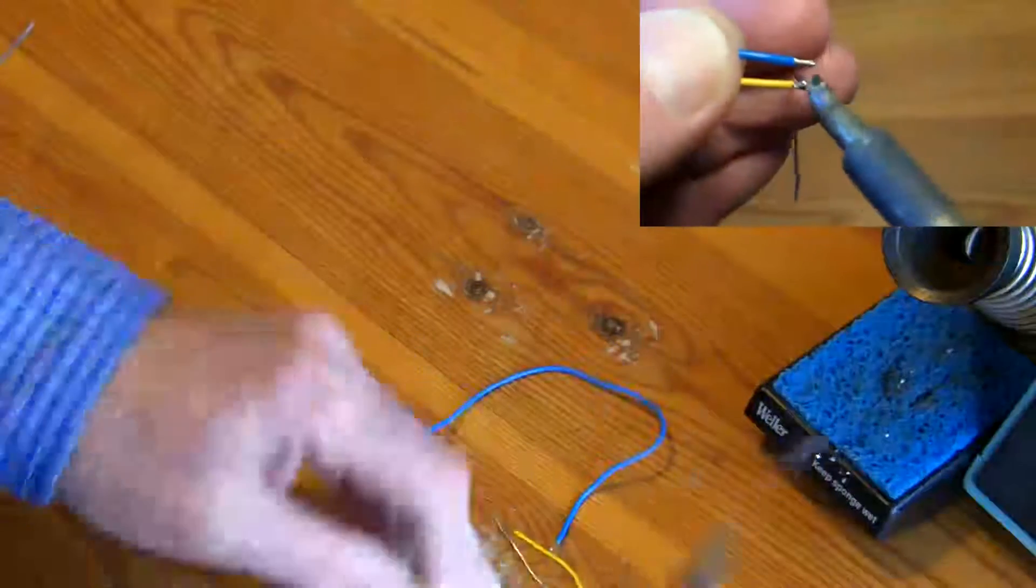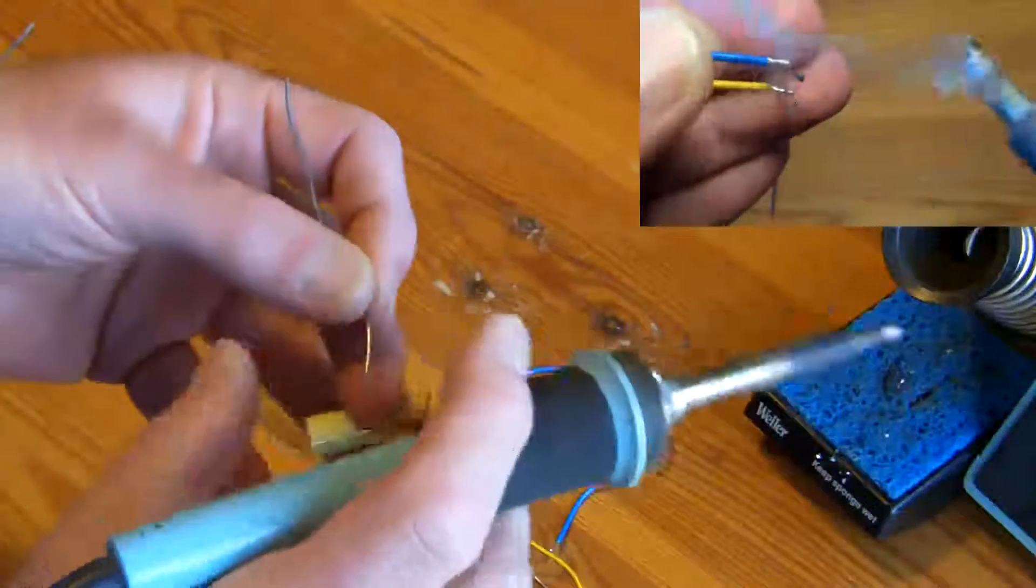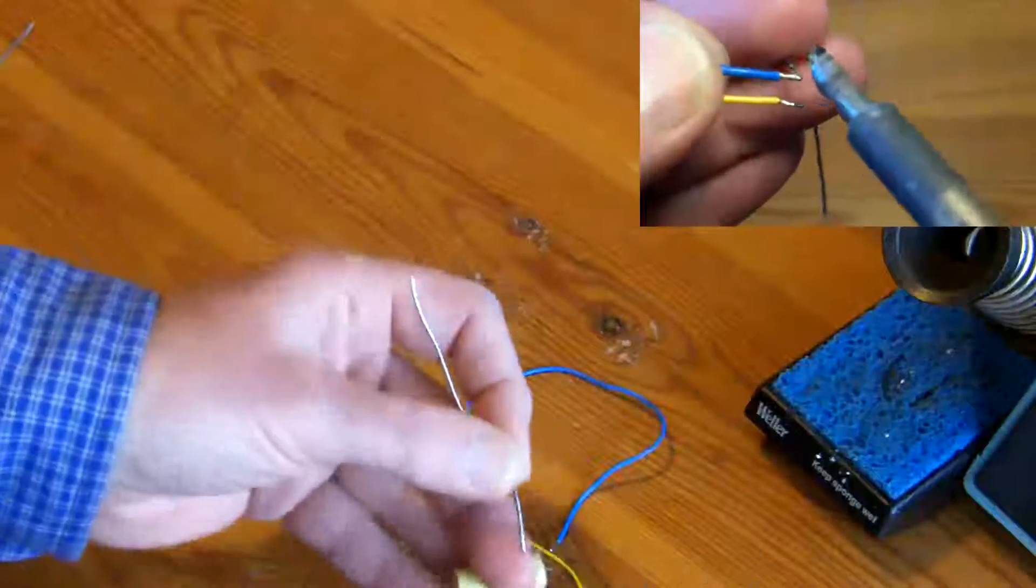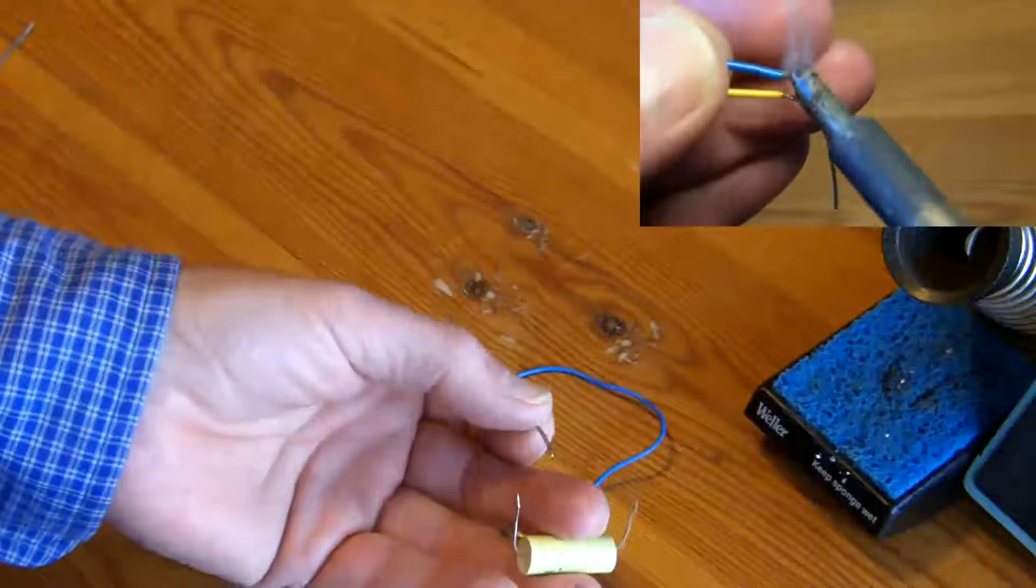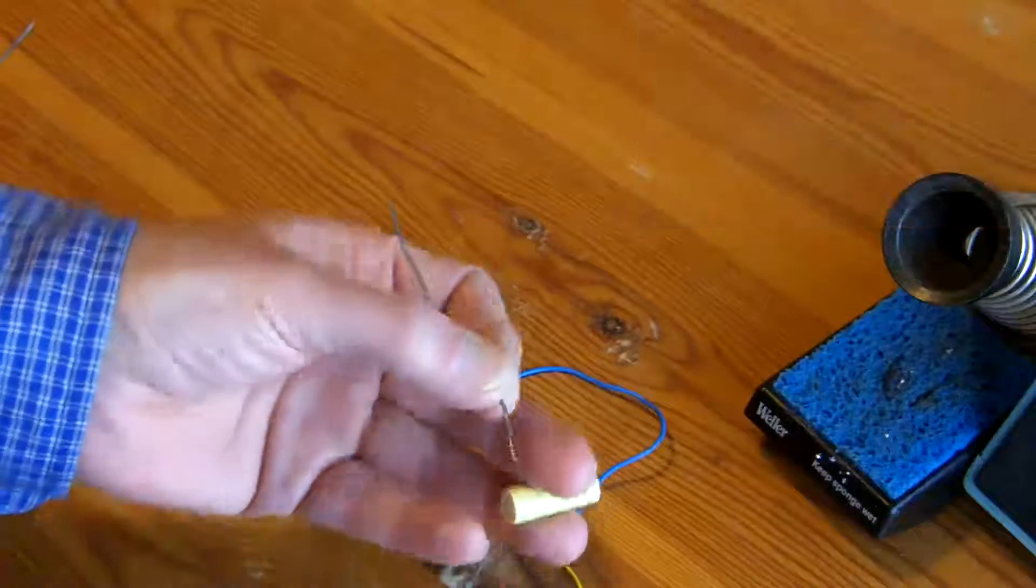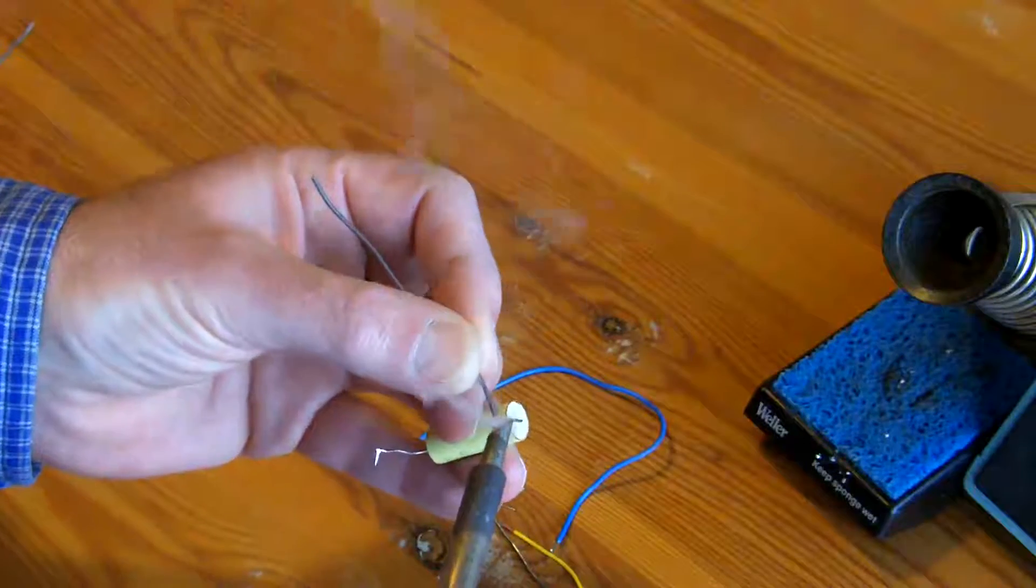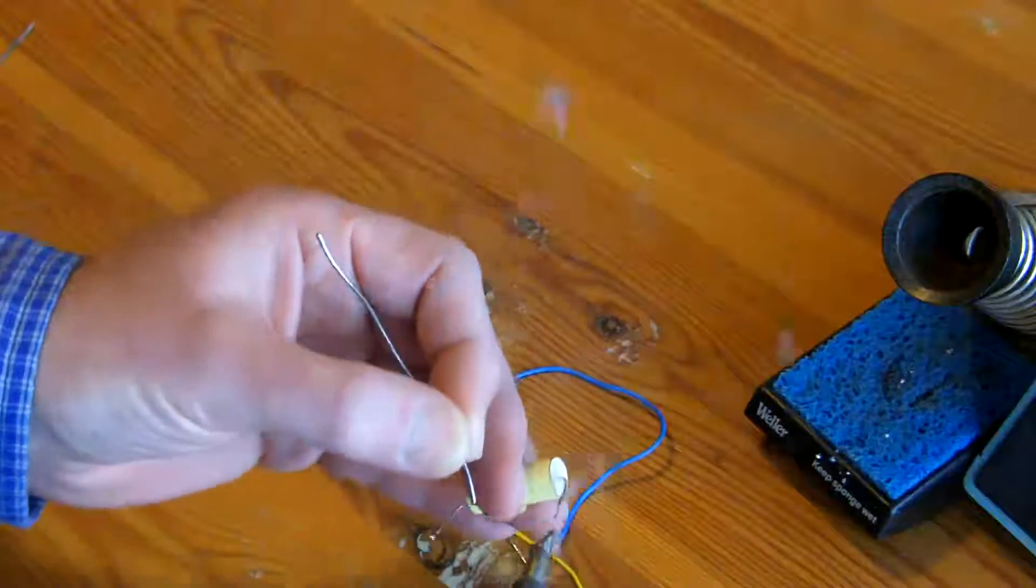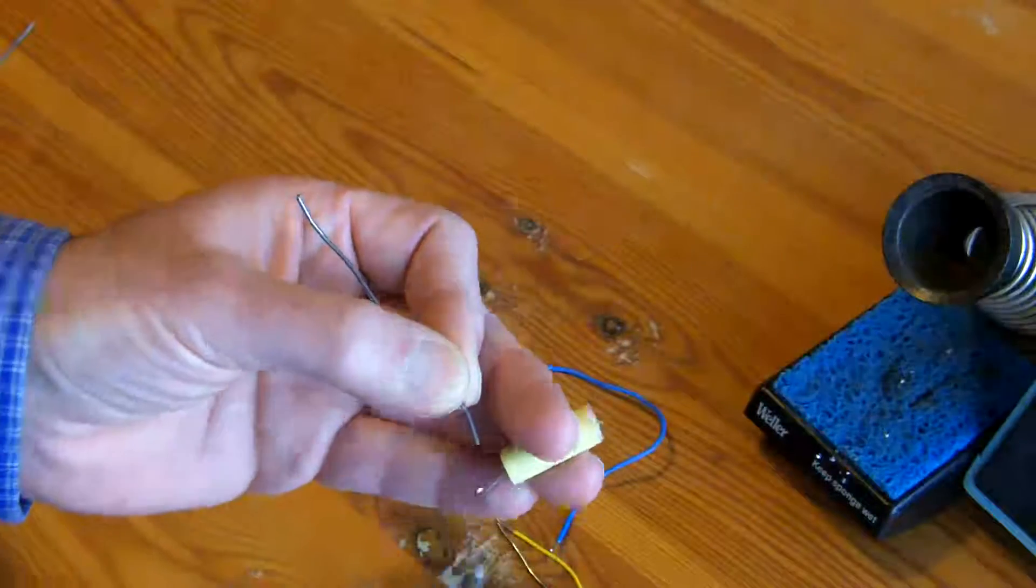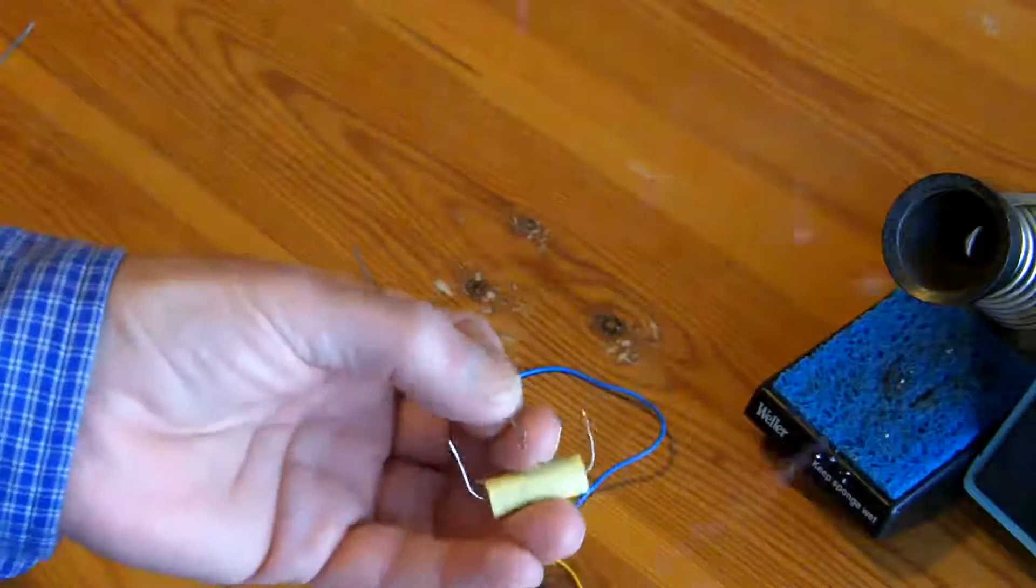You can do the same thing with components. If you've got to tin a component, hold the component between your third and fourth finger and just have the solder there so that you can just dab it into place. It probably takes a little bit of practice, but I've been doing it for so many years, it's second nature.